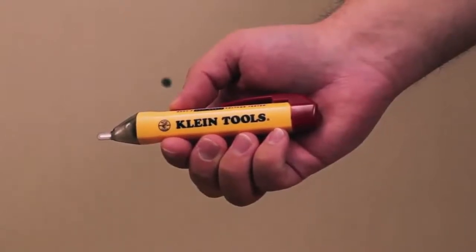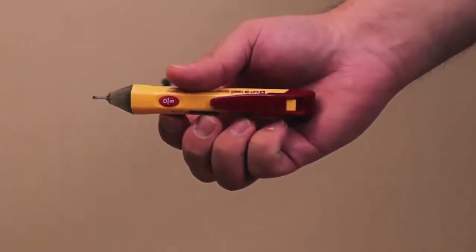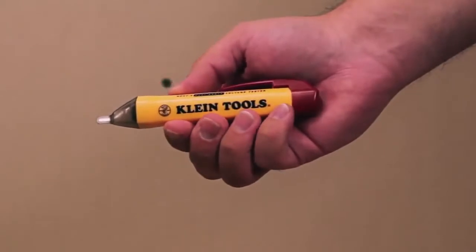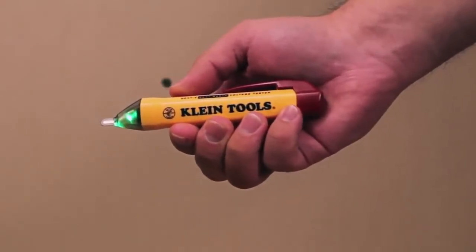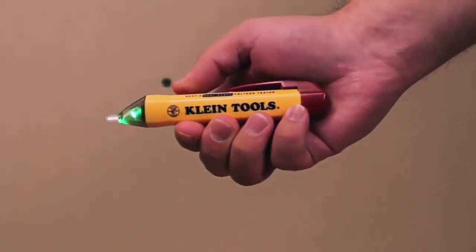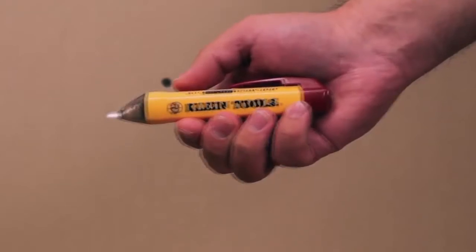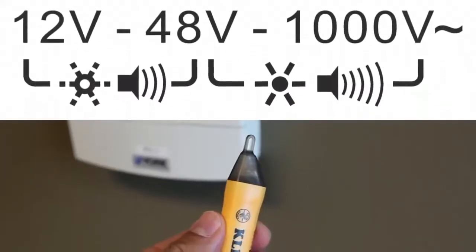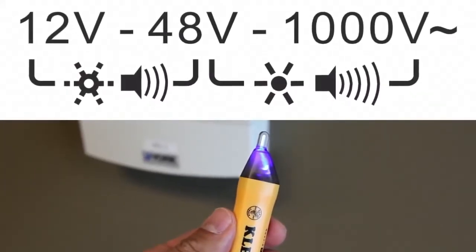Klein Tools is proud to introduce the NCBT2 Dual Range Non-Contact Voltage Tester. The NCBT2 is designed to detect and indicate both standard voltage between 48 and 1000 volts AC and low voltage between 12 and 48 volts AC.